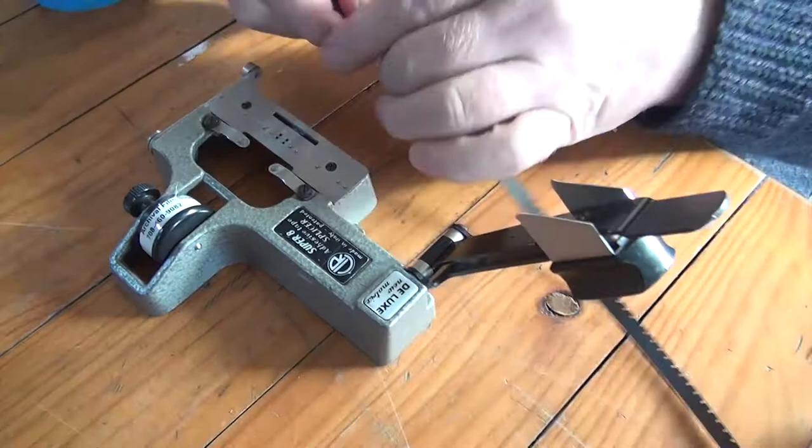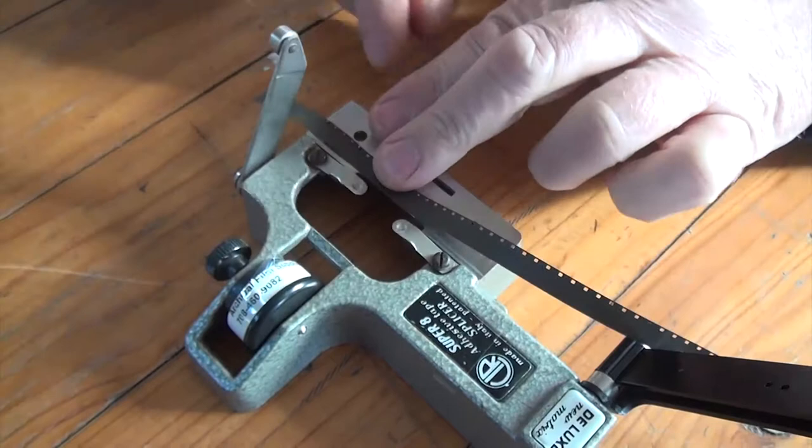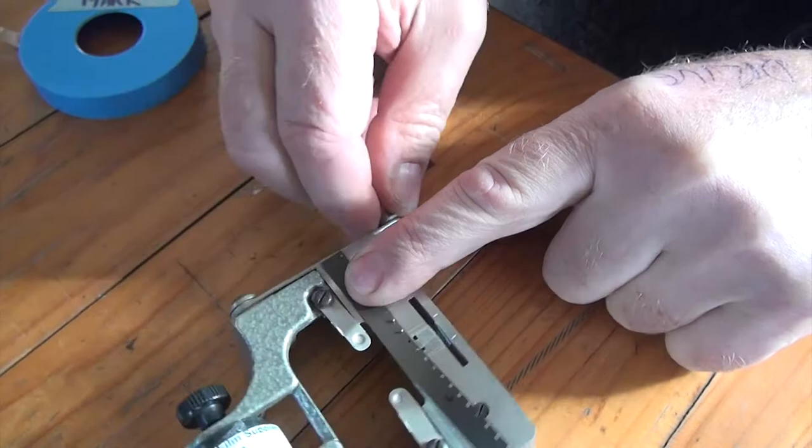So here's the cutting part. I'm going to cut the film here by putting the perforations on the pins and bringing this down. Now like with the 16mm one, I'm going to push very slightly that way and cut a nice square splice cut along the frame line.